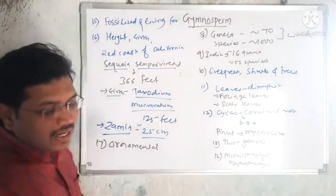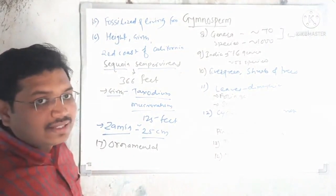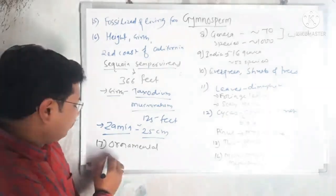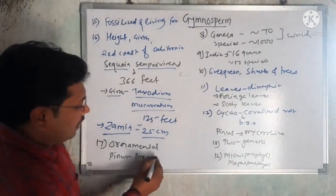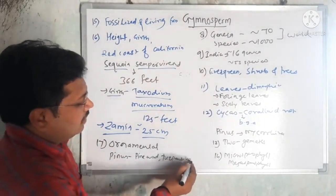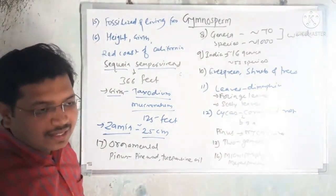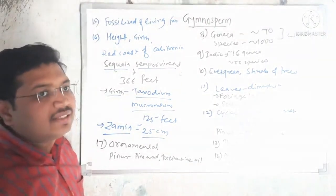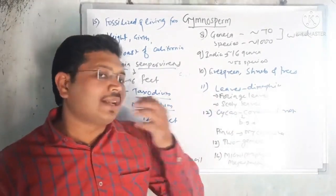Gymnosperms have various uses. They are used as ornamental plants in lawns, gardens, and botanical gardens. Pinus is useful for pine wood and for turpentine oil. Other examples include Cycas, Gnetum, Ginkgo, and the Christmas tree, all of which are gymnosperms with practical or ornamental value.